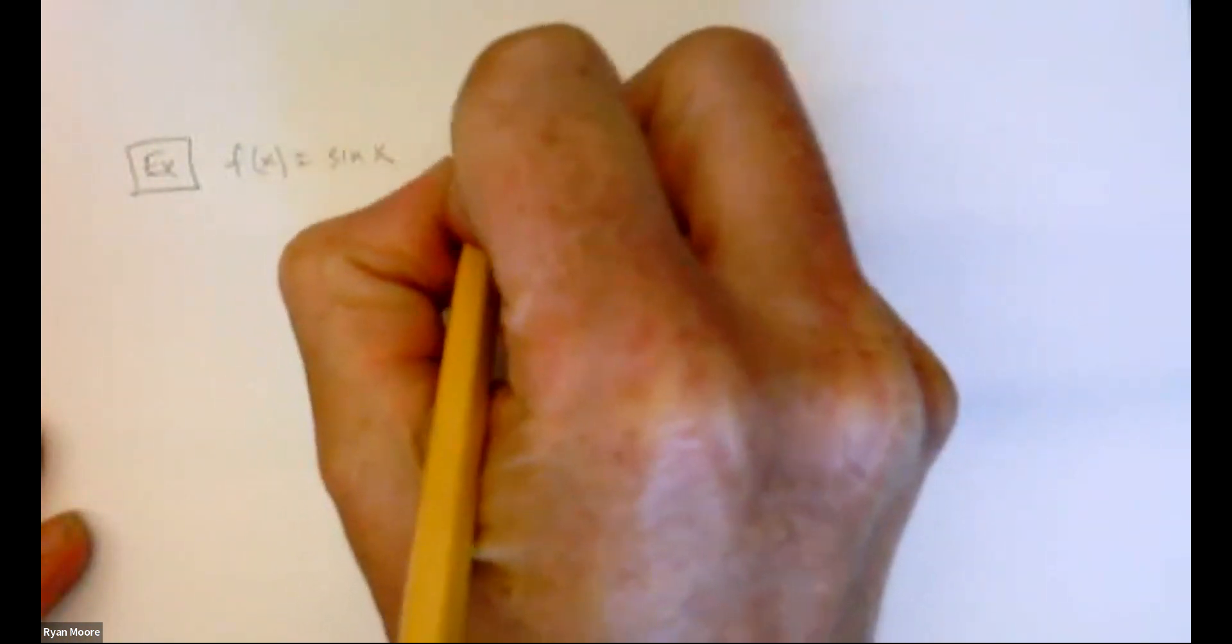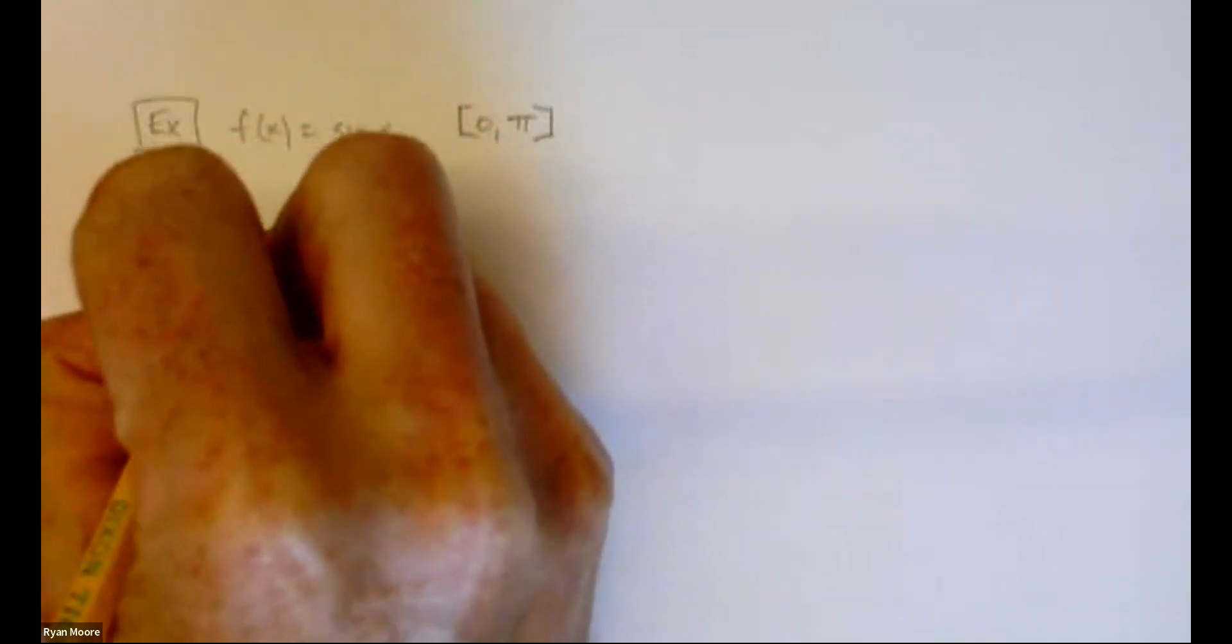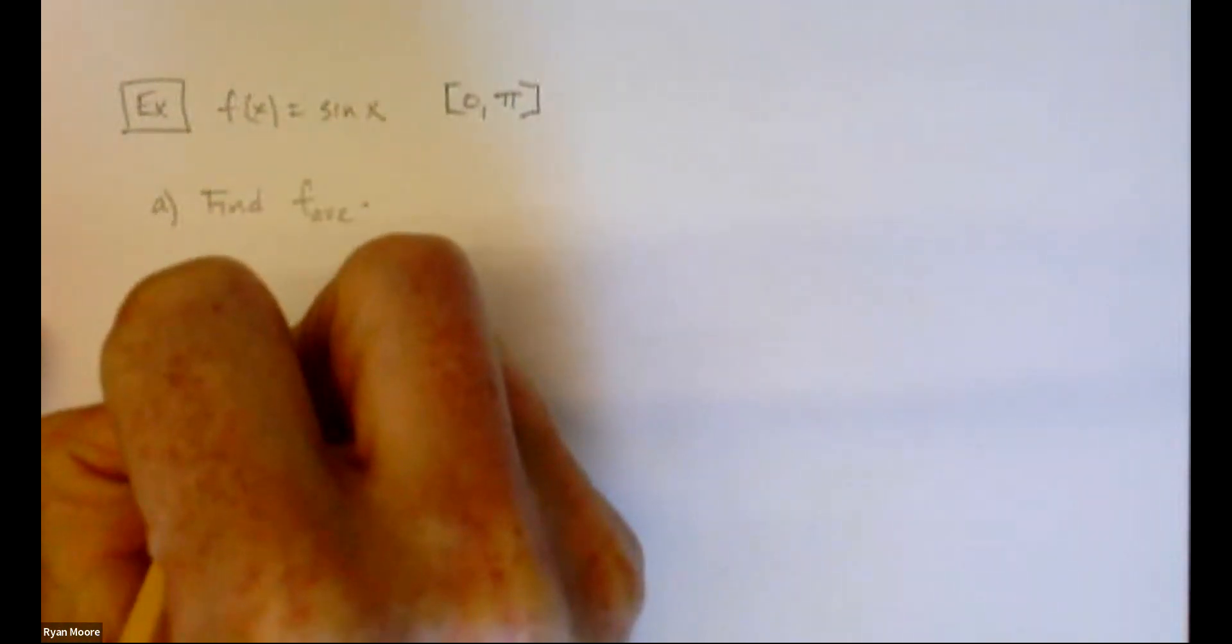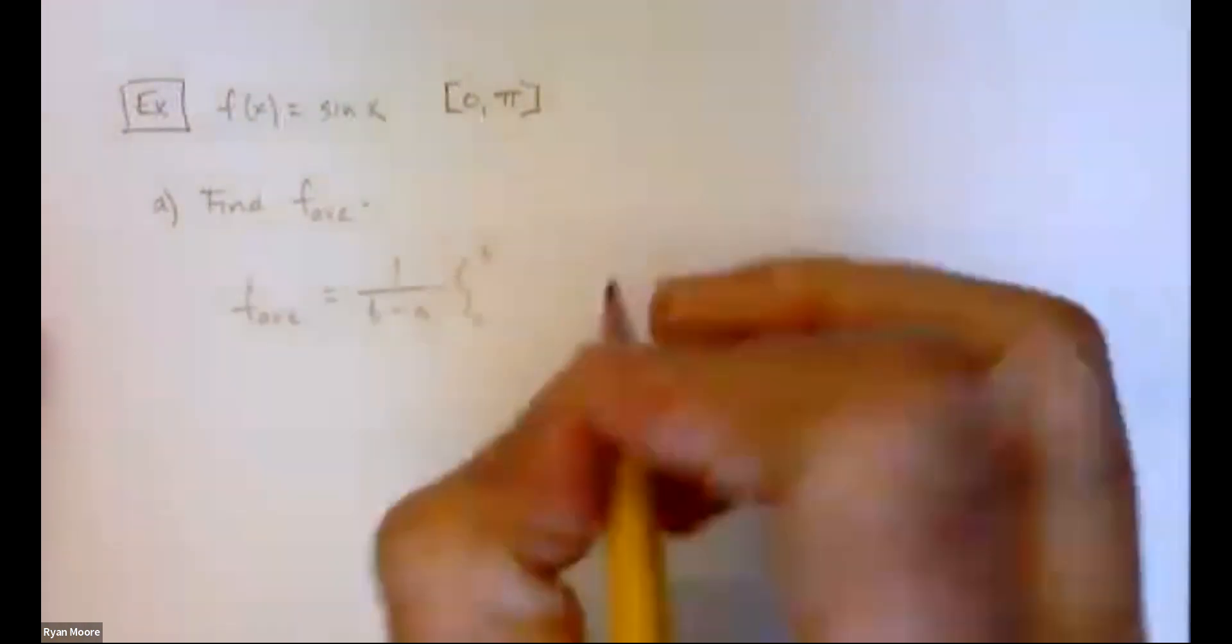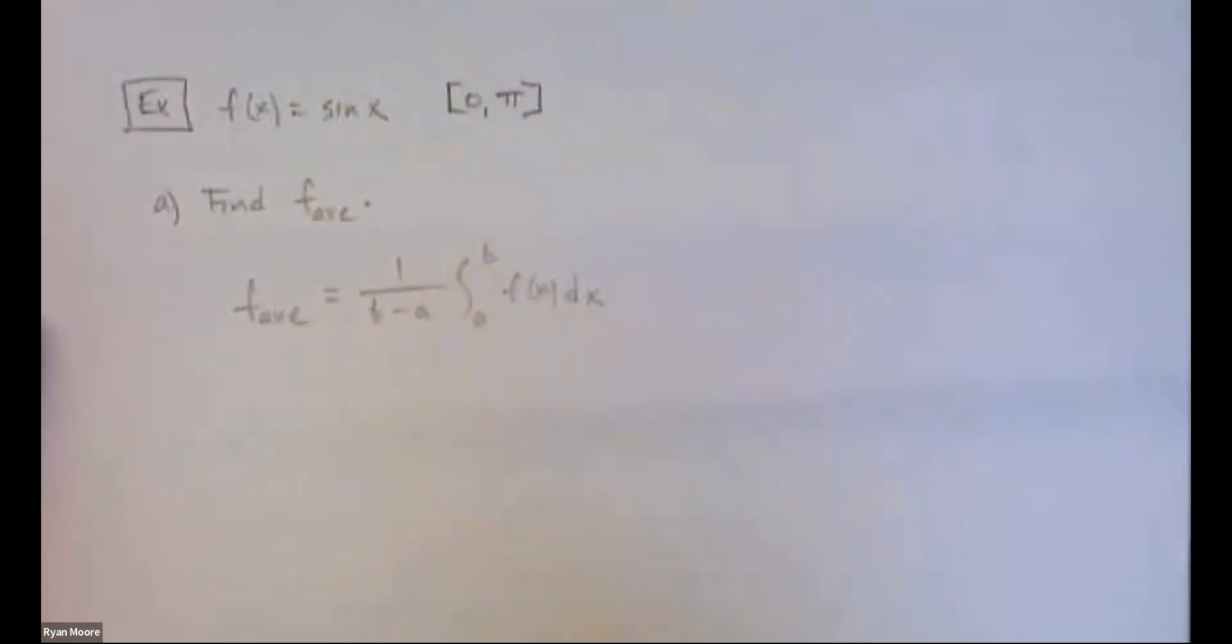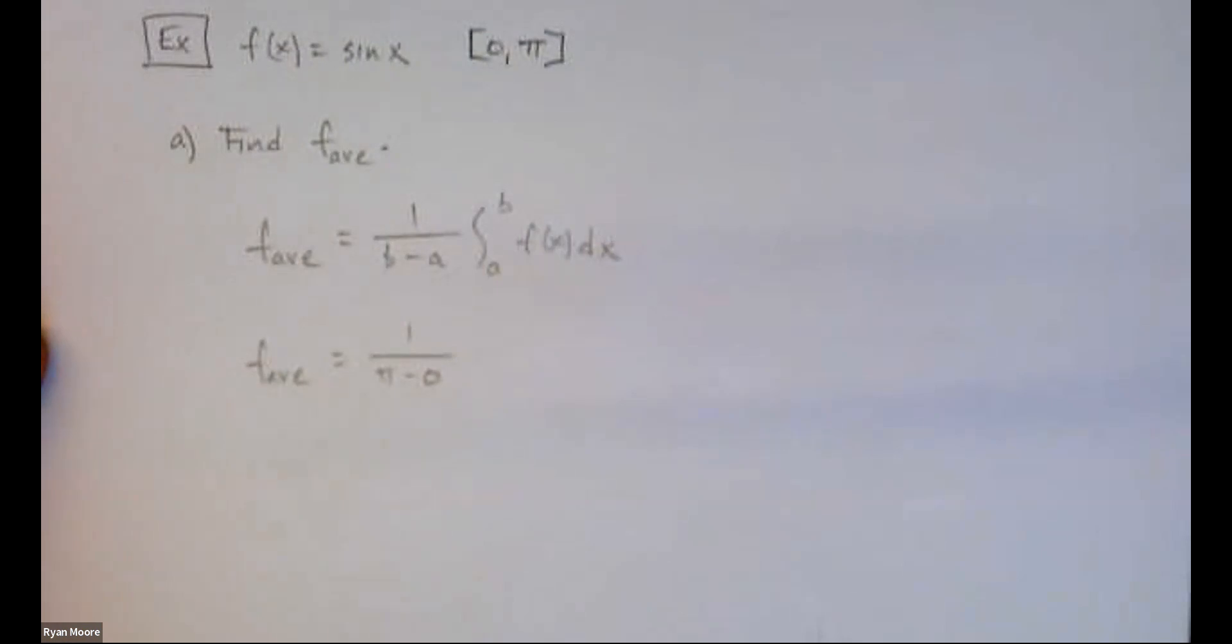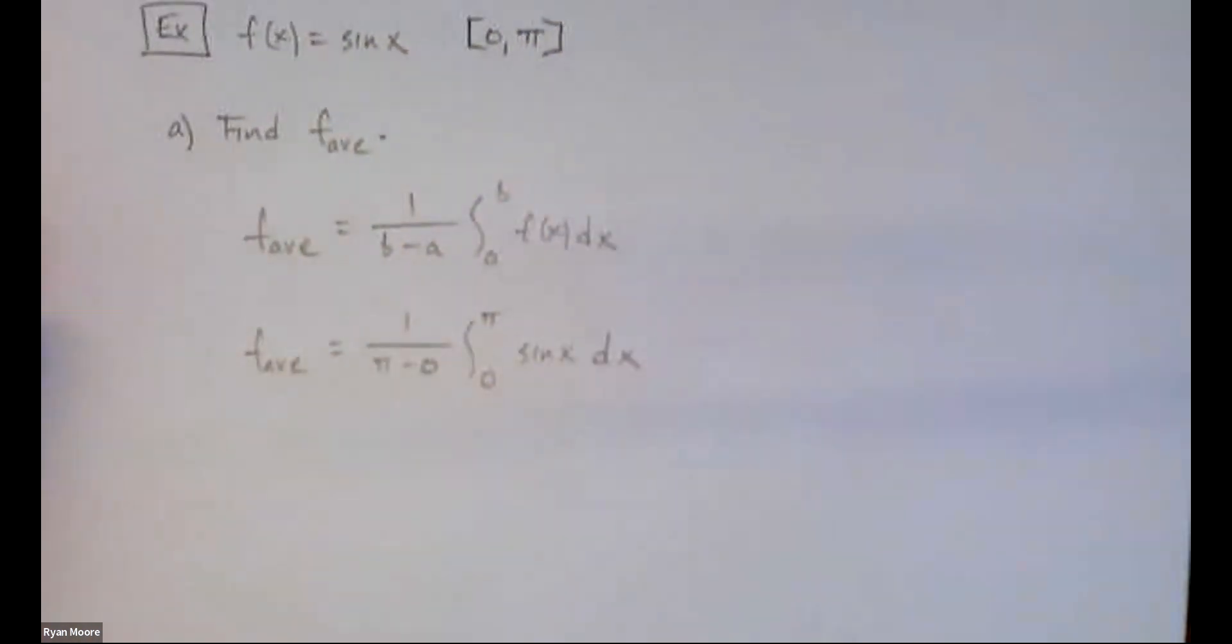Over to my paper here. The example said we're going to think of f of x equals sine x from 0 to pi. Our a was to find f average. So we know, I'll repeat the formula. F average equals 1 over b minus a integral from a to b f of x dx. So for us, this would be 1 over pi minus 0, from 0 to pi sine x dx. It's just that simple.